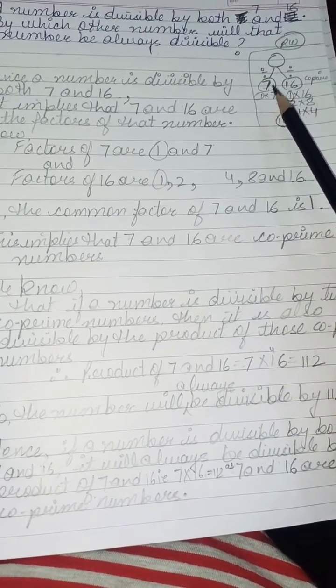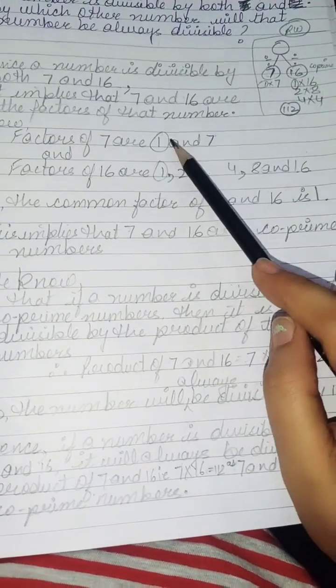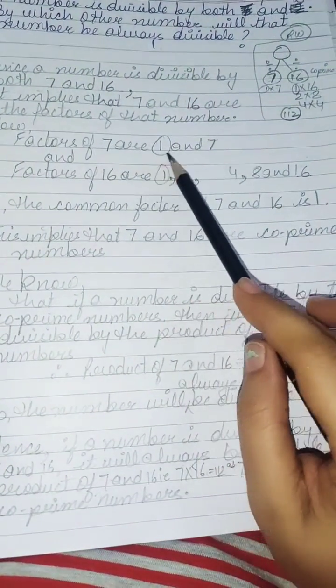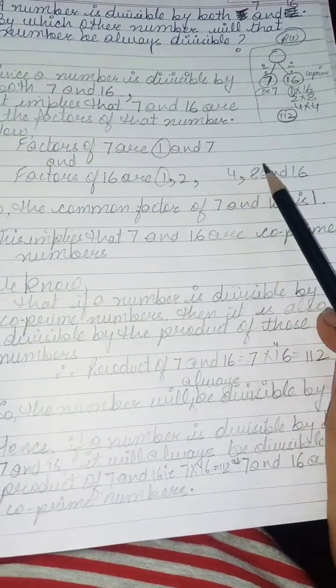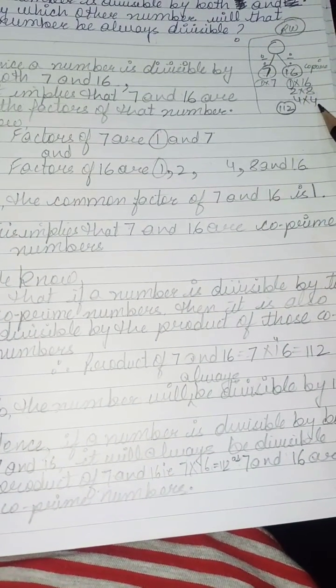Ab ab mekhenge ki jo 7 hai, uske factors kya hai? 1 and 7. So the factors of 7 are 1 and 7 and factors of 16 are 1, 2, 4, 8 and 16. Yaha pe bhi amne show kya hai.